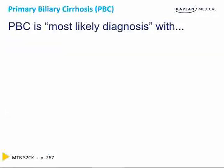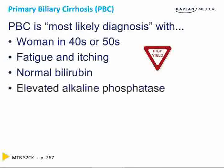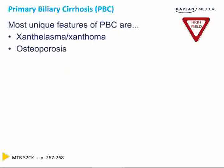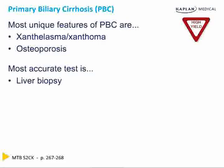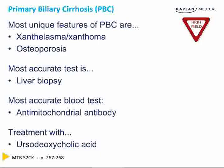Primary biliary cirrhosis is the most likely diagnosis when you're presented with a woman in her 40s or 50s who complains of fatigue and itching with a normal bilirubin but a solely elevated alkaline phosphatase. Common features include xanthelasma or xanthomas and osteoporosis. The most accurate test is a liver biopsy; the most accurate blood test is an antimitochondrial antibody. Treatment is with ursodeoxycholic acid.